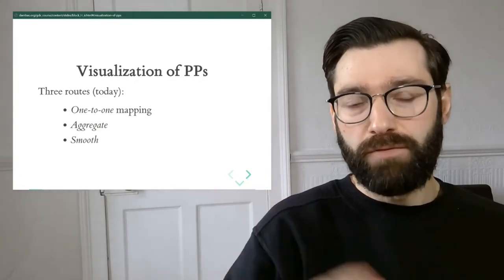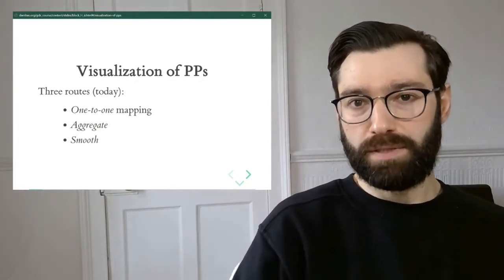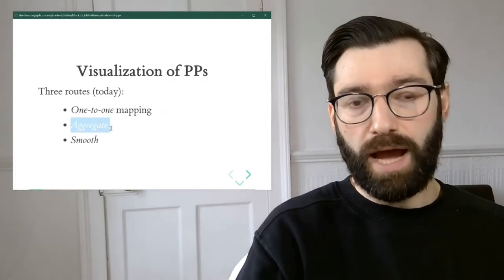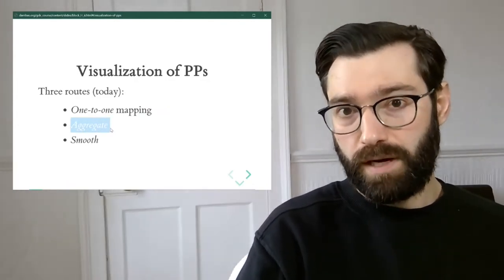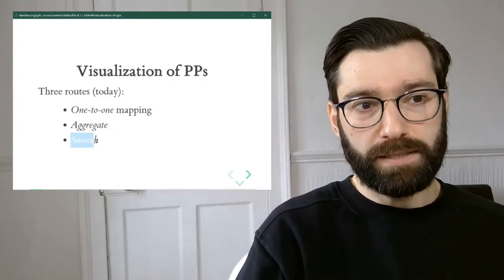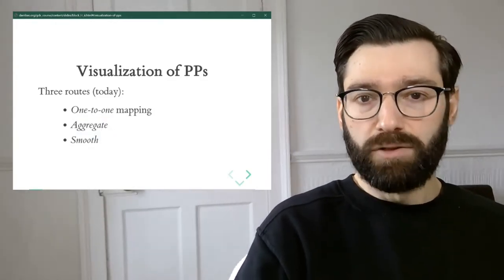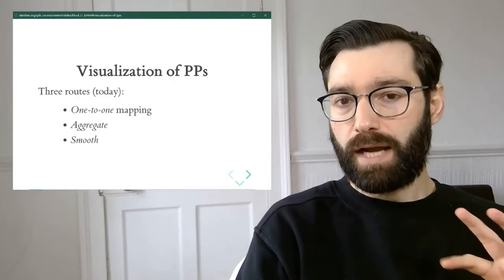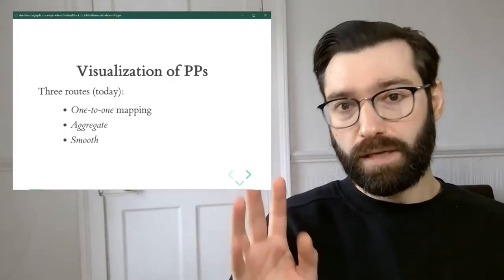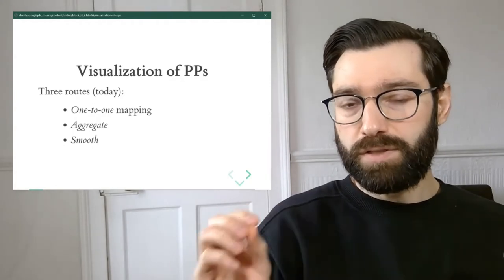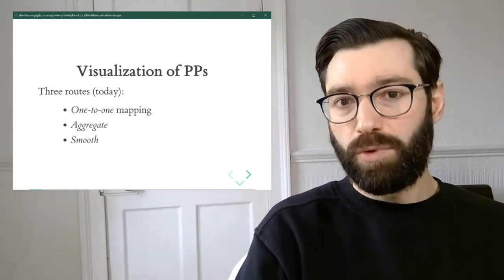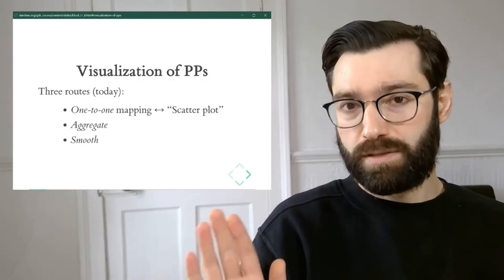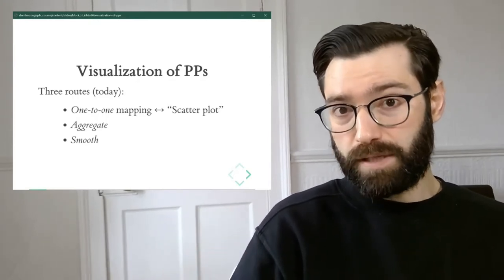We're going to explore three main visualization routes for visualizing point patterns today. The first one we will call one-to-one mapping. The second one relies on aggregation into an ancillary or auxiliary geography. And then the third one relies on smoothing techniques. To better conceptualize and frame these three options, there are some mental counterparts you can use. One-to-one mapping is akin to a scatterplot — in fact, it is a scatterplot where the two variables we're plotting are core geographical coordinates.